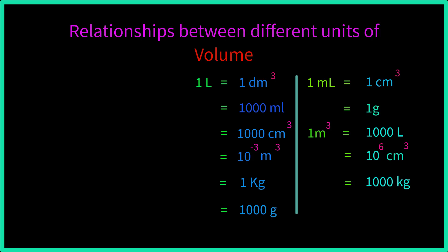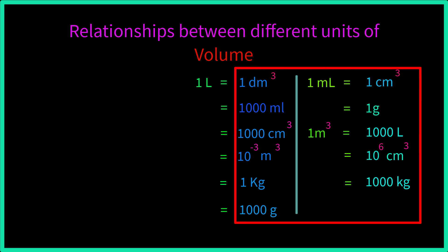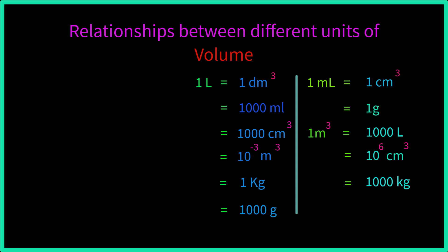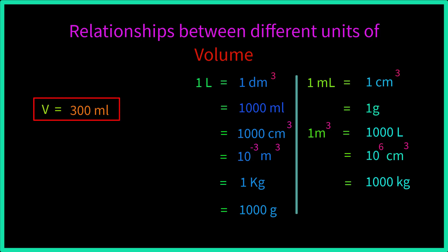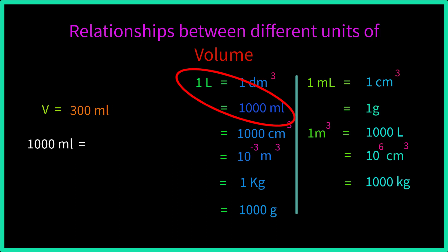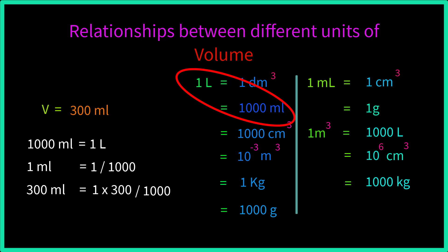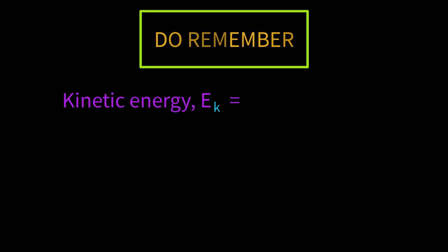Now we will learn how to convert volume units to liters. Suppose volume V equals 300 milliliter in a stimulus. We need to convert milliliter into liter. From the chart, 1000 milliliter equals 1 liter, so 300 milliliter equals 300/1000 liter, which equals 0.3 liter.